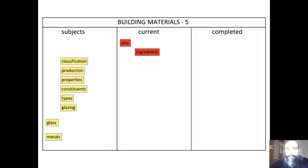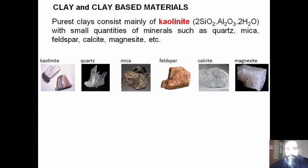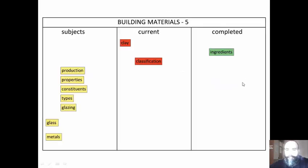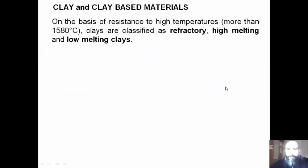The purest clays consist mainly of kaolinite, with small quantities of minerals such as quartz, mica, feldspar, calcite, magnetite, etc. On the basis of resistance to high temperatures — more than 1580 degrees Celsius — clays are classified as refractory, high melting, and low melting clays.